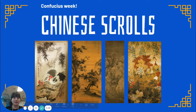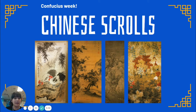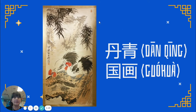Here are some examples of Chinese scroll art. You can see that a lot of them are made with ink — it's not really paint, it's more of a thin type of ink that they paint with. A lot of times the pictures are of nature or landscapes. Landscapes are somewhere outside. Sometimes there's people, and they're all very detailed and beautiful. In Chinese, these types of paintings are called danjing or guohua.